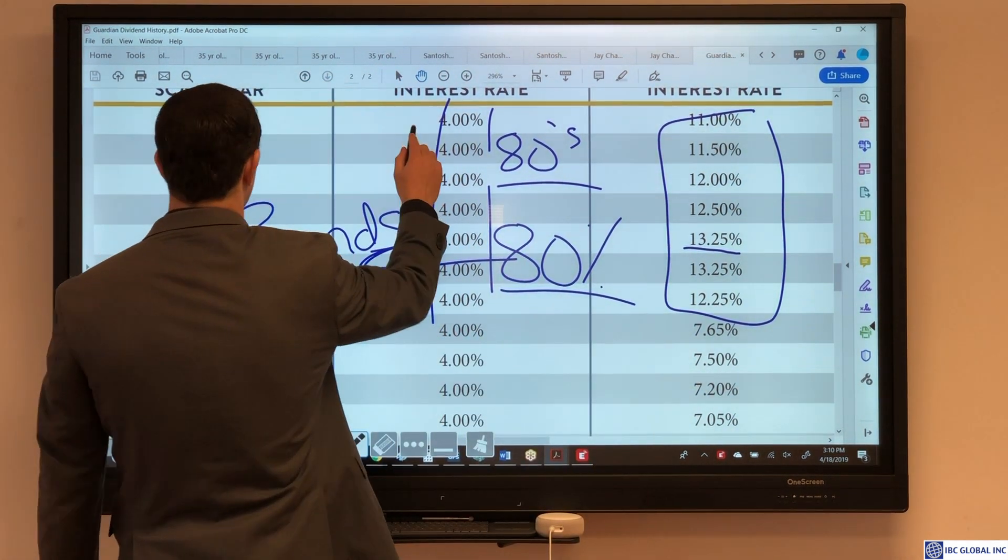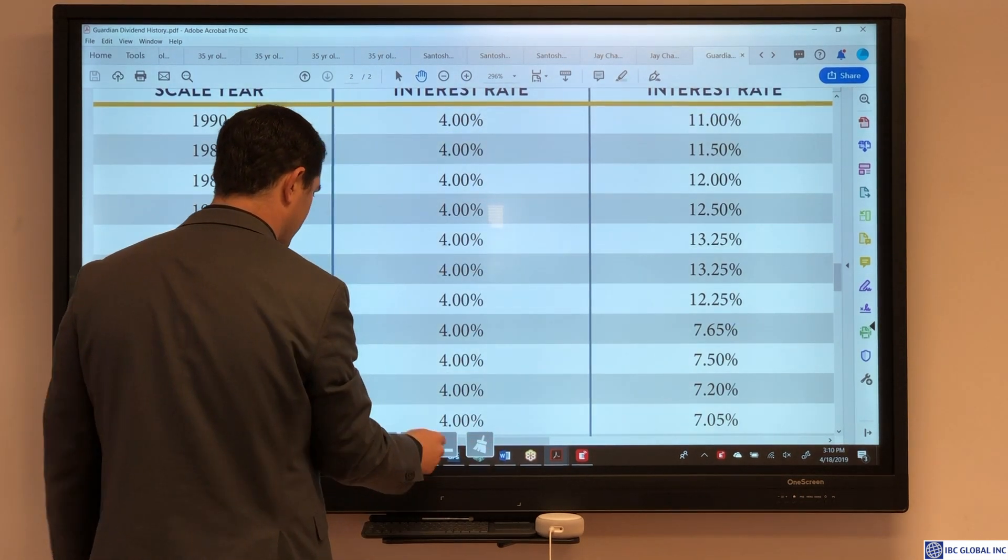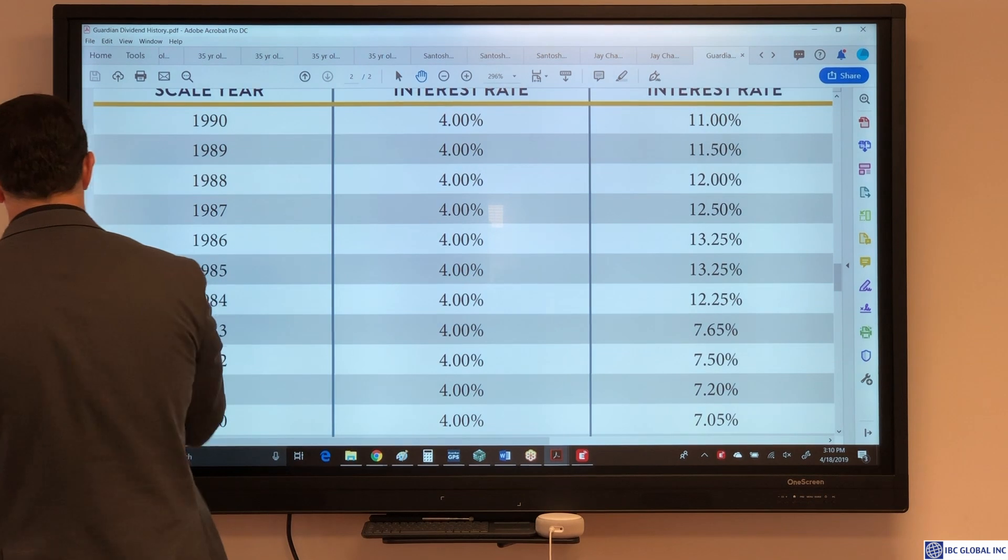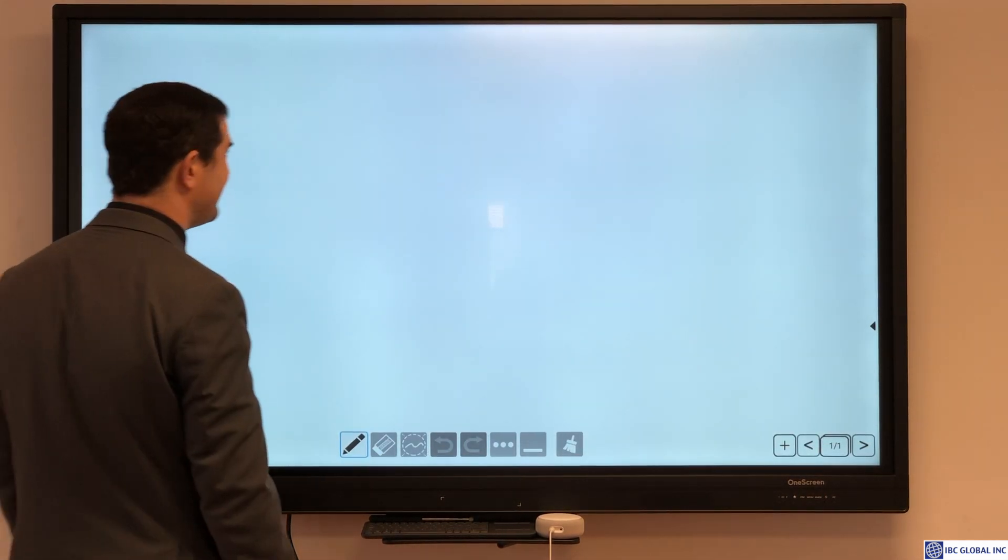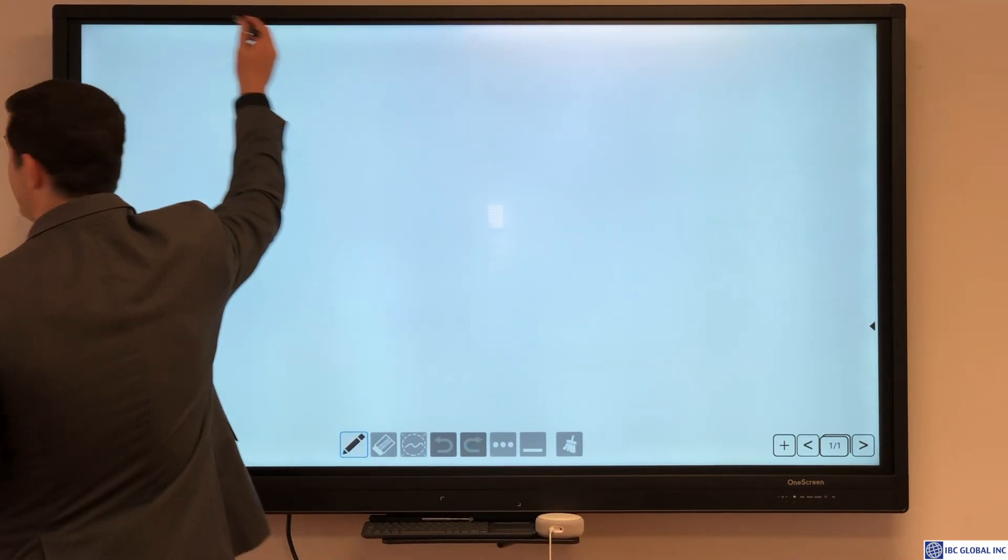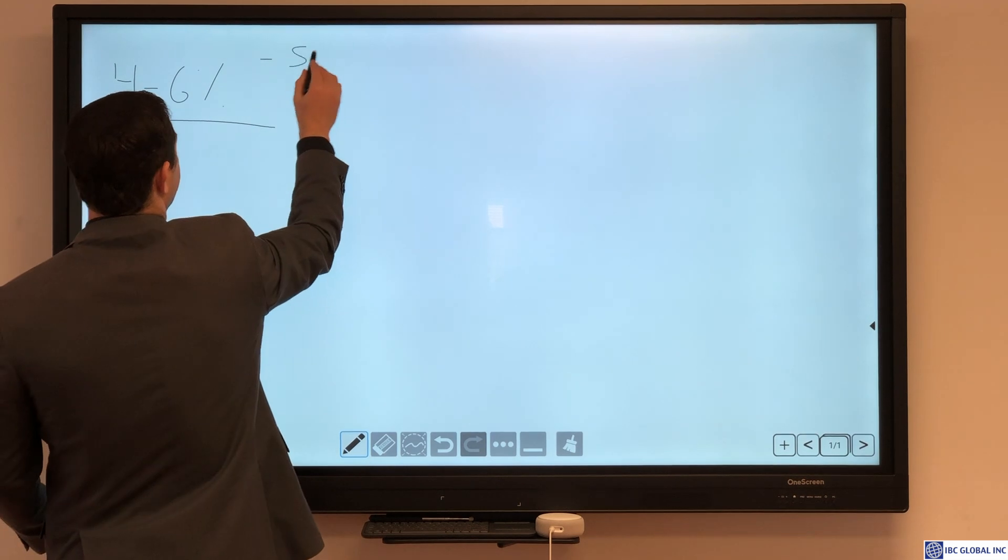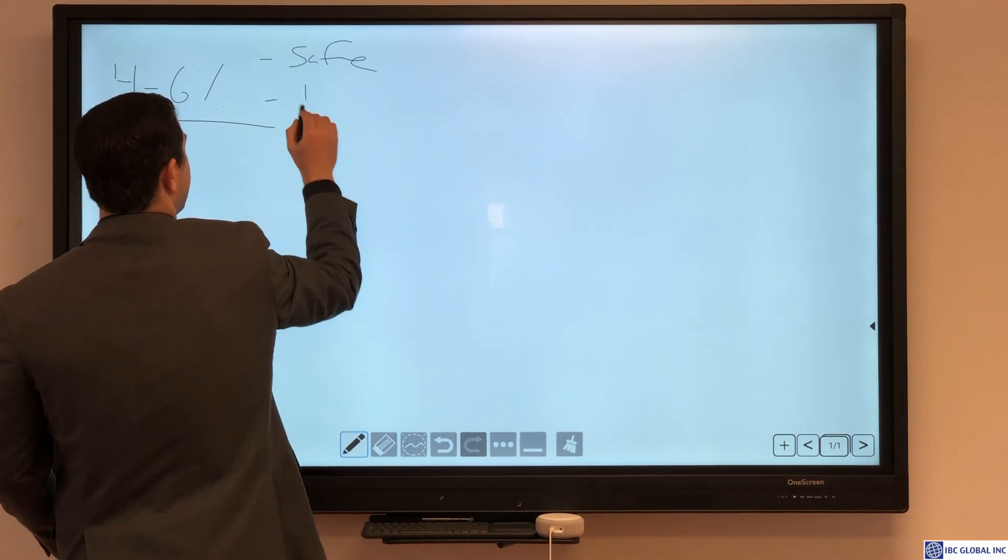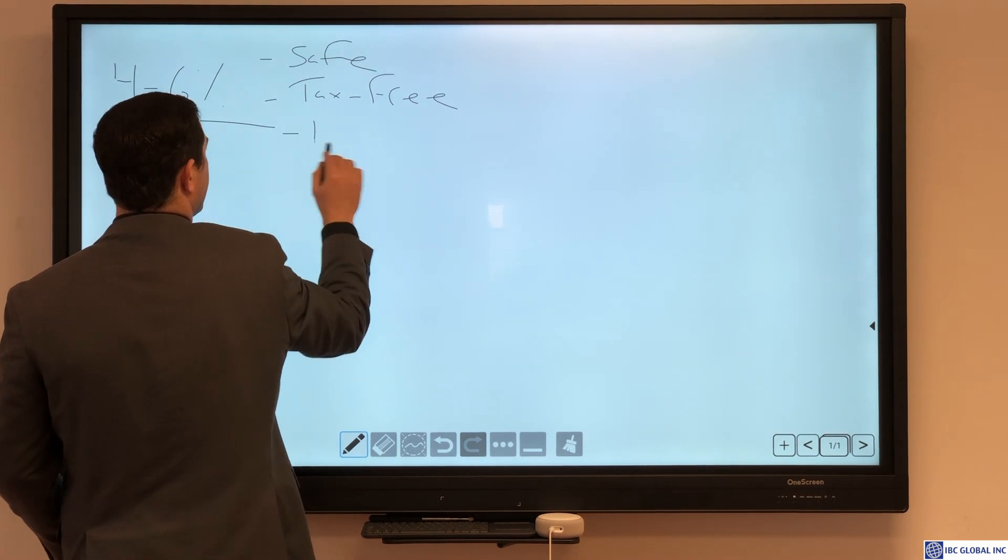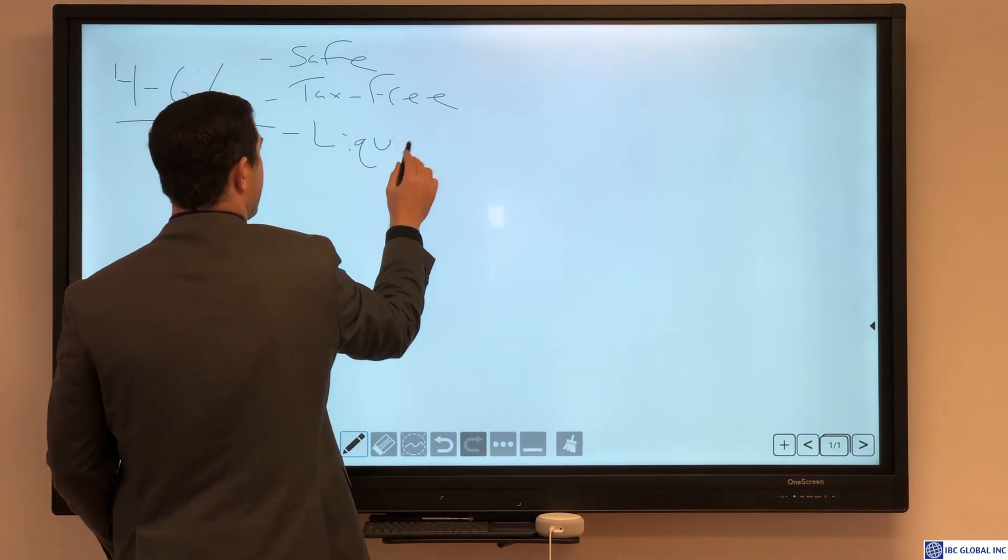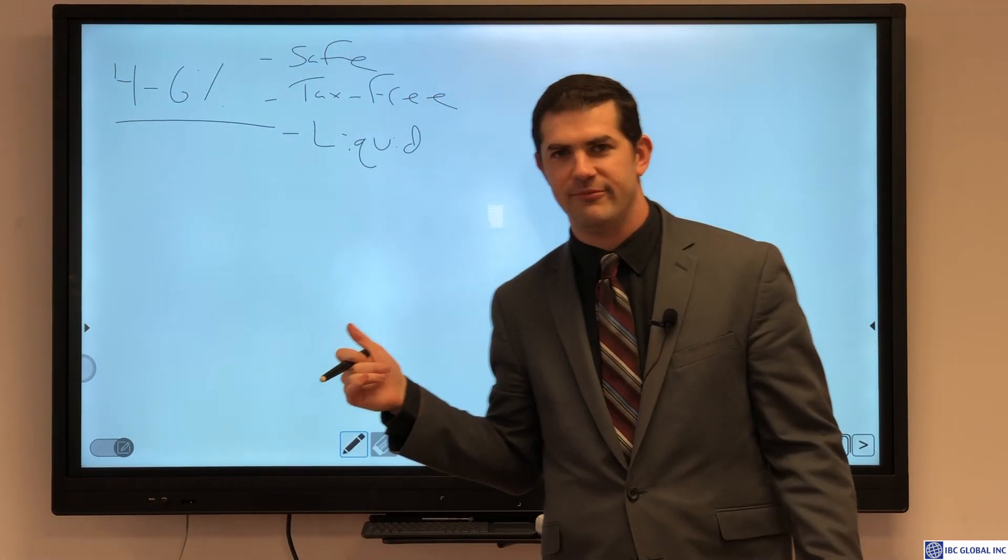Bonds, especially today, if we go back up to the top, don't even keep up with the guaranteed rate of four percent. So what are insurance companies doing with their money to credit these dividends? So I'm still going to get a net return of four to six percent. That's safe, tax-free, liquid. How? If I'm earning four to six percent, it means the insurance company's earning a lot more than that.